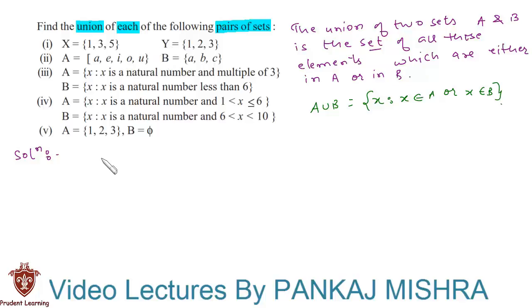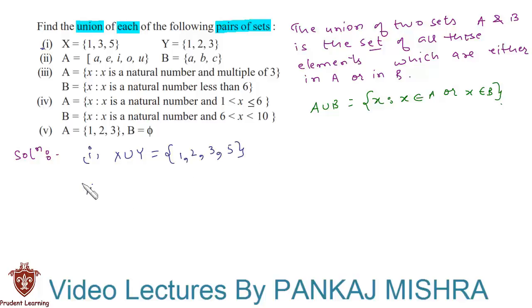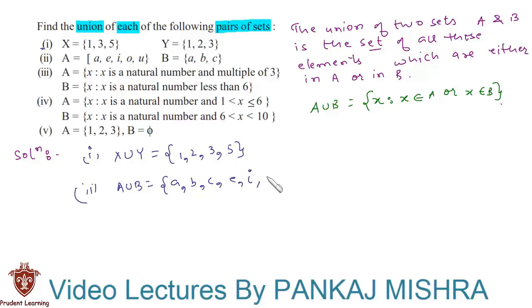In our first section, X union Y is a set containing elements 1, 2, 3, and 5. Similarly, for section 2, A union B is a set containing elements A, B, C, E, I, O, and U.